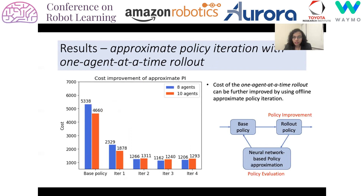We also include results for approximate policy iteration with one-agent-at-a-time rollout. In this method we start with a base policy and improve it using the rollout algorithm described earlier. The rollout policy is then approximated by a neural network, which then replaces the base policy for the next iteration. In the figure you can see that we achieve cost improvement at each iteration using this algorithm.